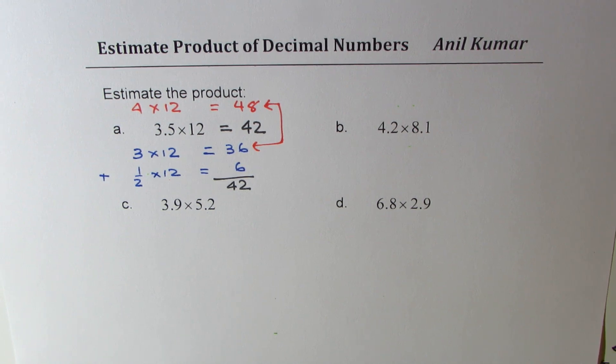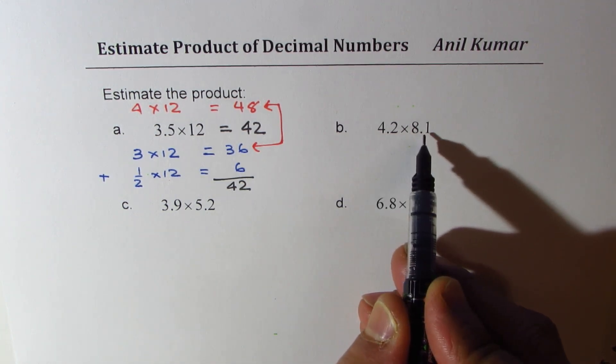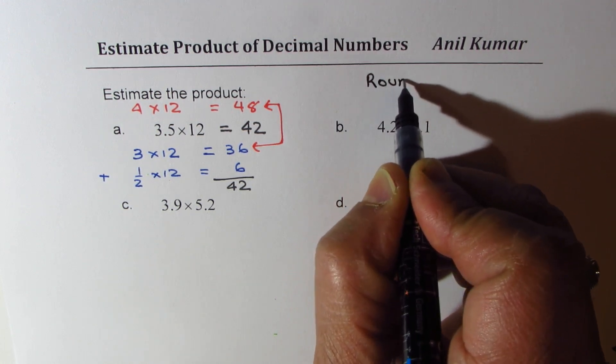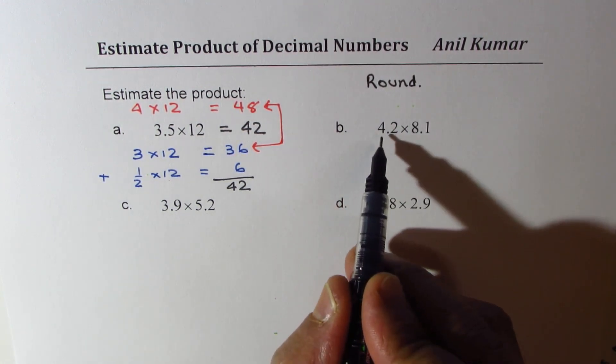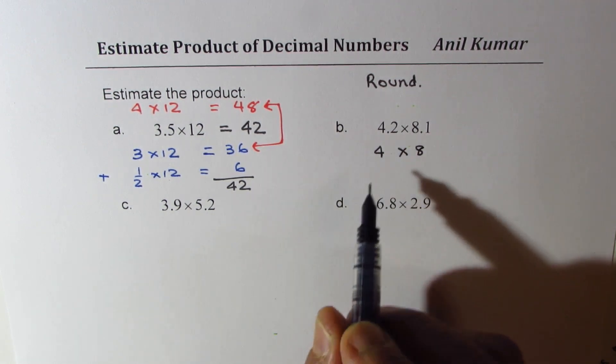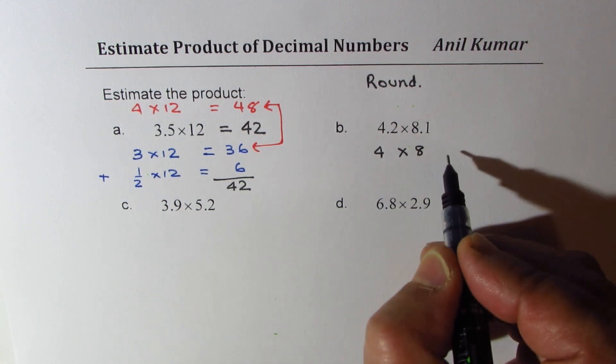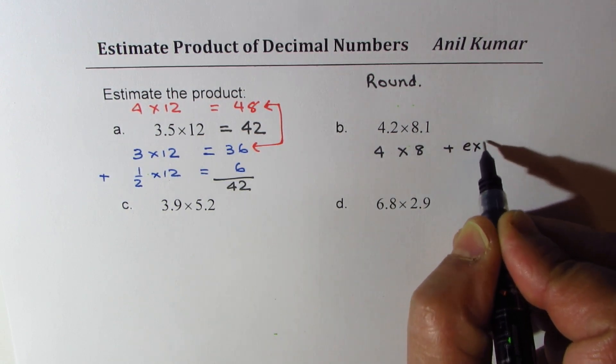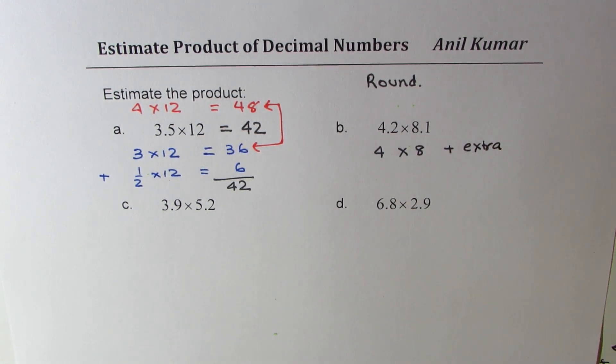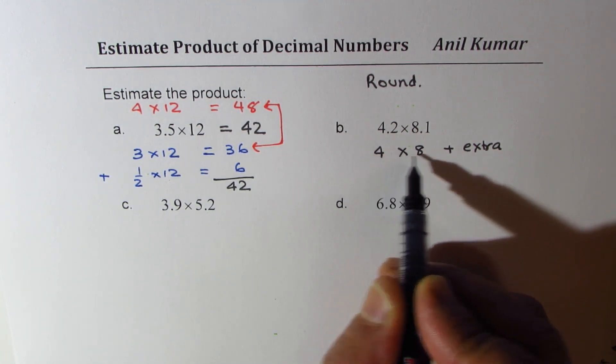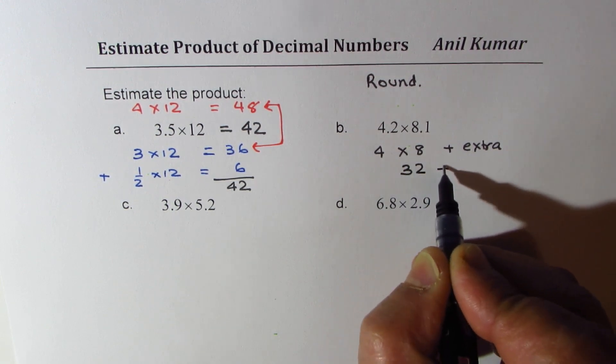Now let's do 4.2 times 8.1. In this particular case, I will round and then estimate. I could round this to 4 and this to 8. So we get 4 times 8 plus something extra, because there is 0.2 times 0.1. 4 times 8 is 32, so we have 32 here plus extra.